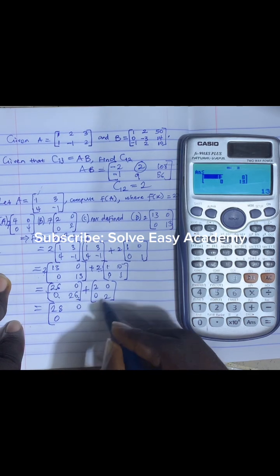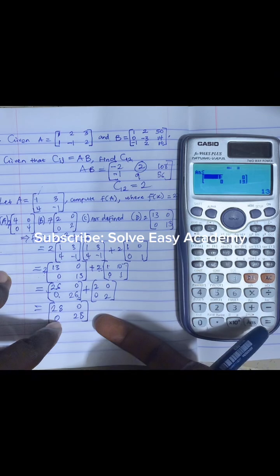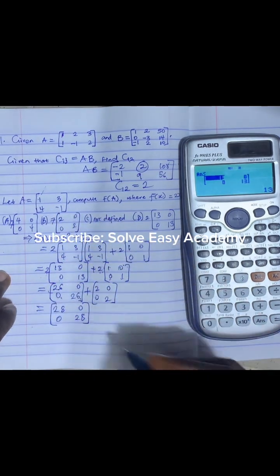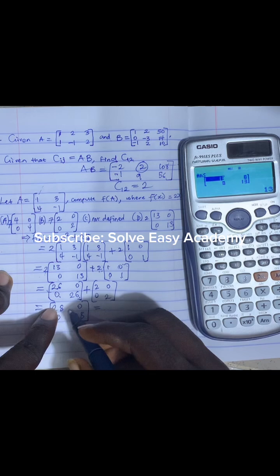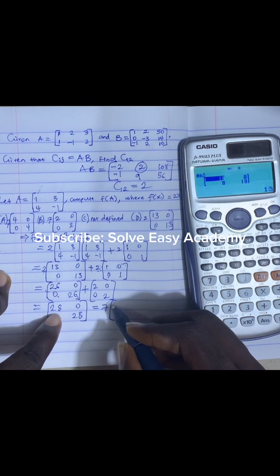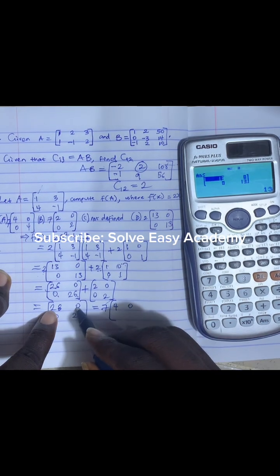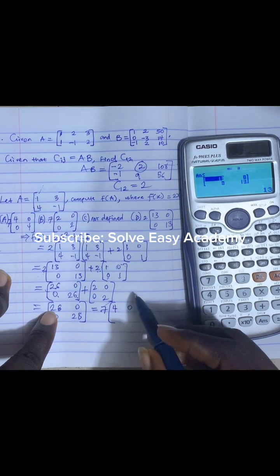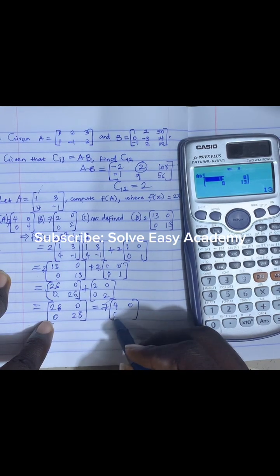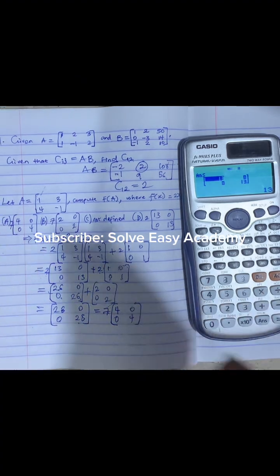Now this doesn't look like any of the options we have, so let's make it look like it. Now this is the same thing as taking out 7 here. So we have 7 times 4 gives us this 28, then 7 times 0 gives us 0, then 7 times 0 gives us the 0 we have here, and 7 times 4 gives us 28.